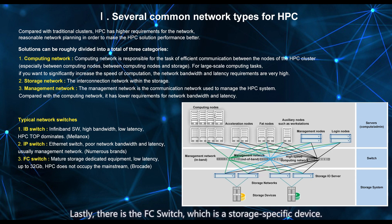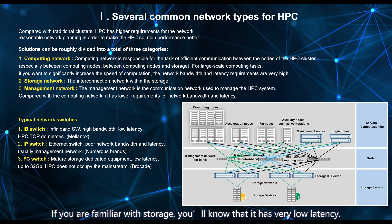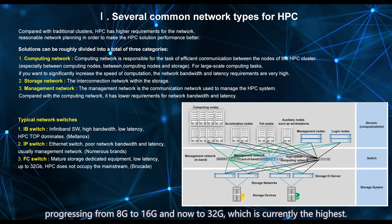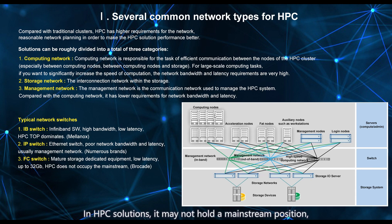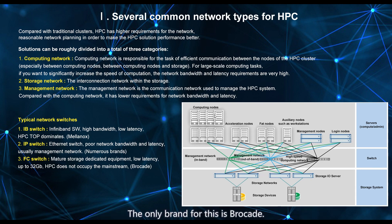Lastly, there is the FC switch, which is a storage-specific device. If you are familiar with storage, you'll know that it has very low latency. However, its bandwidth development has been slow, progressing from 8G to 16G and now to 32G, which is currently the highest. This slow development might be a bottleneck for its growth. While latency is its advantage, bandwidth has not increased significantly. In HPC solutions, it may not hold a mainstream position, but it could still be used in some small to medium-sized scenarios. The only brand for this is Brocade.